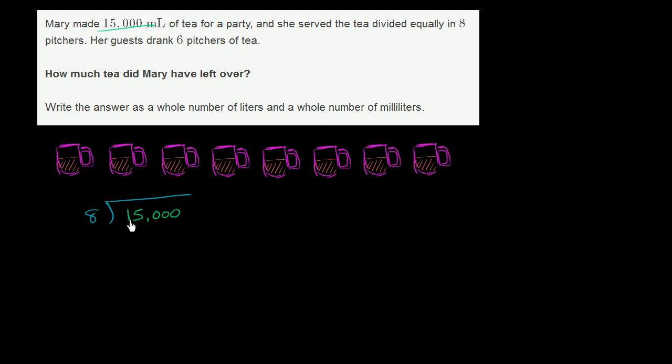So eight doesn't go into one. It goes into 15 one time. One times eight is eight. Subtract. 15 minus eight is seven. Bring down a zero. Eight goes into 70 eight times. Eight times eight is 64. Subtract. We get a six. Bring down another zero.